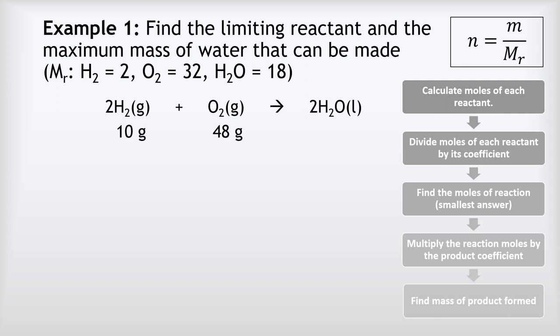Example one: find the limiting reactant and the maximum mass of water that can be made in the reaction 2H2S + O2 → 2H2O, starting with 10 grams of H2 and 48 grams of O2. Our process is: first calculate the number of moles, then divide by each coefficient, then identify the smallest answer as the moles of reaction, then multiply by the product coefficient, and finally find the mass using moles = mass / Mr.